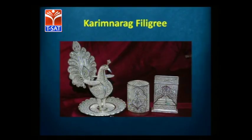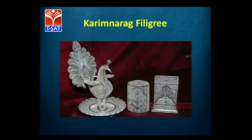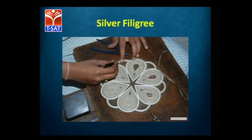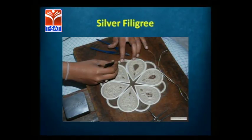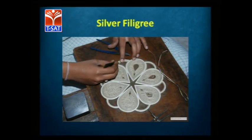Another very interesting craft is Karimnagar Filigree. Karimnagar is famous for filigree, which is done with silver wire — only one single wire is used and the entire structure and shape is created. The metal is silver. It is popularly made in Karimnagar in the context of Telangana, though it is also made in UP and other places.